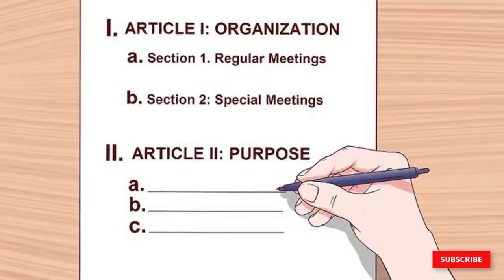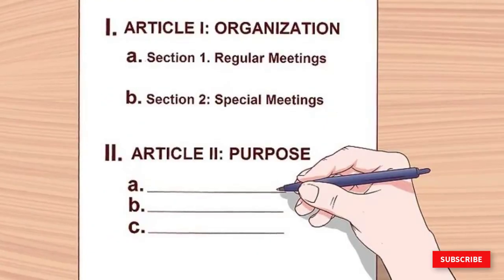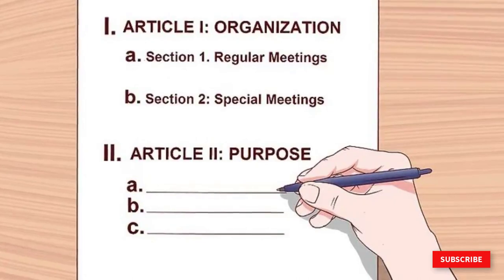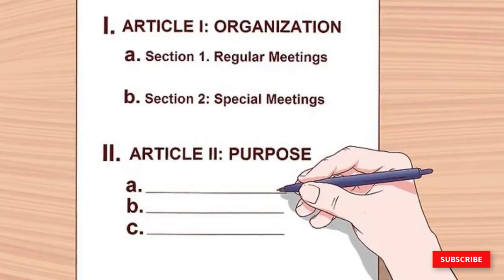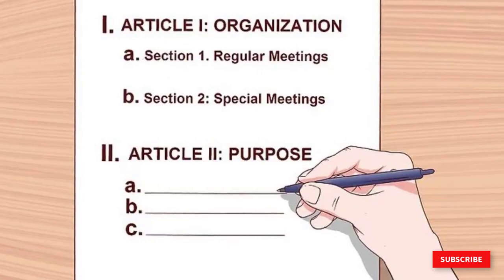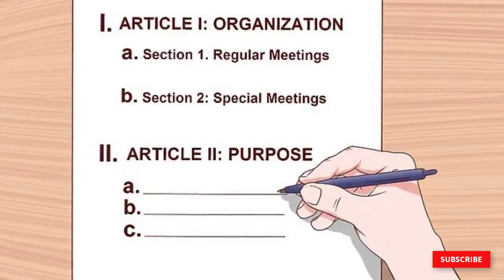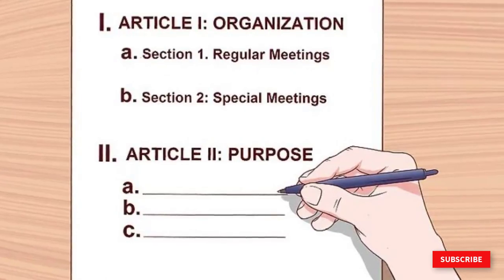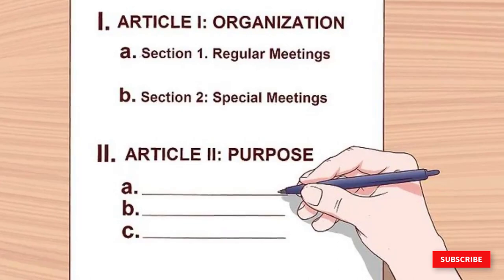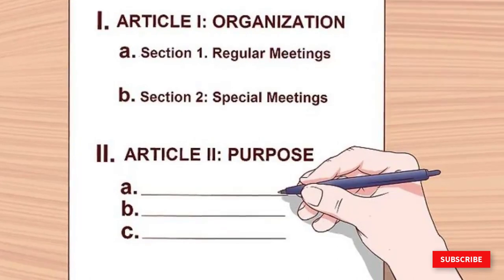For each section in every article, number them clearly and give a one to two word descriptor of the section. For example, you might write Section 1: Regular Meetings, followed by a brief description of the protocol for regular meetings. Then you'd write Section 2: Special Meetings, followed by a brief description of the protocol for special meetings.